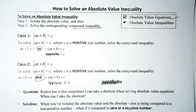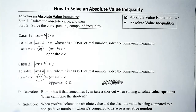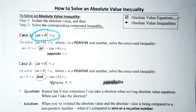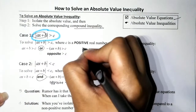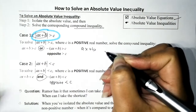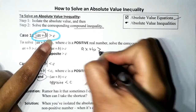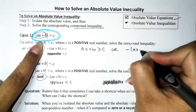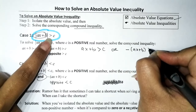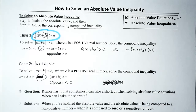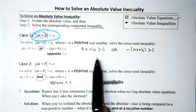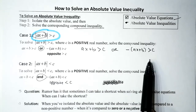First case scenario: if we have an absolute value that's isolated and we have the greater-than symbol, you set it up like this: the inside, copy down the inequality symbol, is greater than C, OR the opposite is greater than C. Just put a negative sign in front. It's like we did with absolute value equations — inside equals number OR opposite equals number — same thing, just replace the equal sign with the inequality symbol.